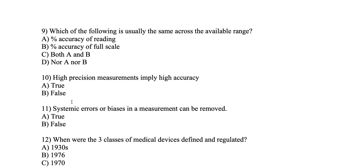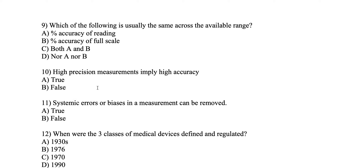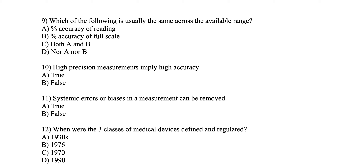Number 9: which of the following is usually the same across the available range? We talked about accuracy of reading and accuracy of full scale. Accuracy of reading gives different accuracies depending on the range — for example, a device measuring zero to 100 millivolts may have different accuracy between zero and 10 millivolts, 10 to 50, and 50 to 100 millivolts. The accuracy of full scale, however, is constant. So the answer here is B.